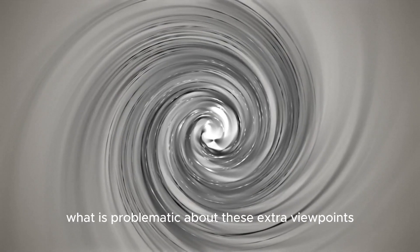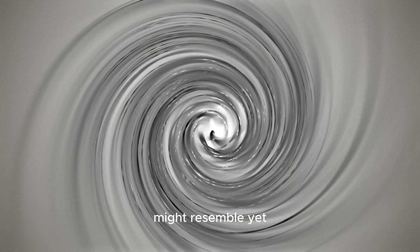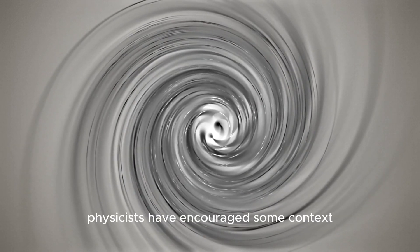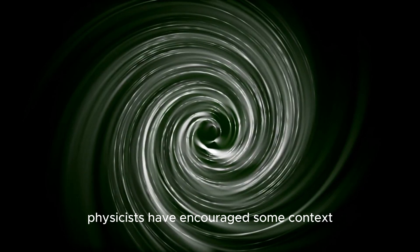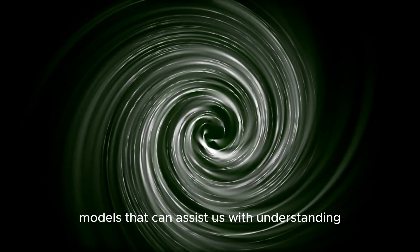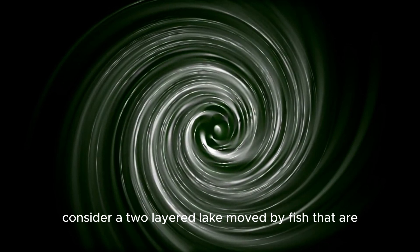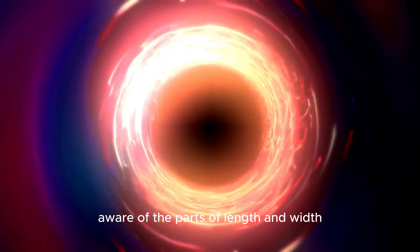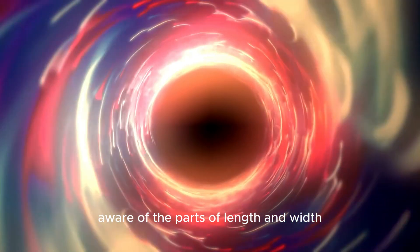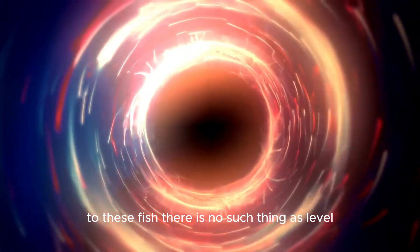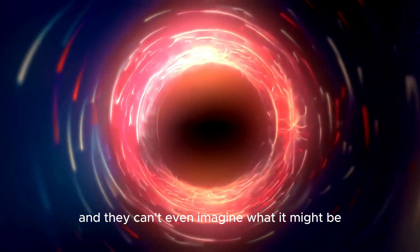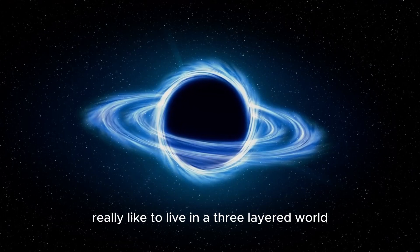Imagining what is problematic about these extra viewpoints might resemble. Yet, physicists have encouraged some context models that can assist us with understanding. Consider a two-layered lake moved by fish that are figuratively speaking aware of the parts of length and width. To these fish, there is no such thing as level, and they can't even imagine what it might be really like to live in a three-layered world.